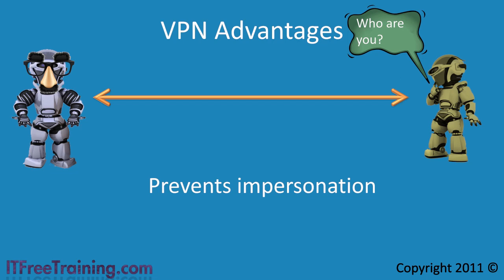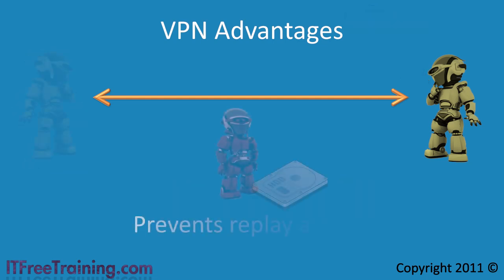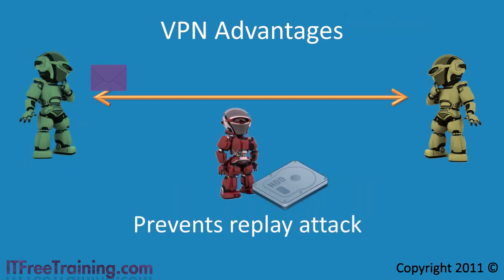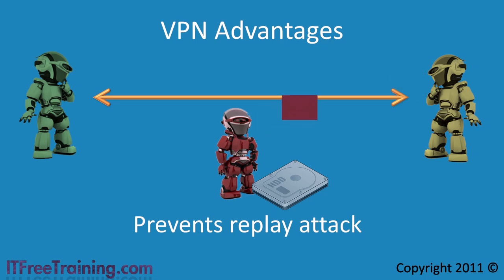A VPN connection also prevents what is referred to as a replay attack. A replay attack is when network traffic is saved by a third party and then played back at a later date. The start of a network stream usually contains traffic that authenticates the connection, such as usernames and passwords. If a third party captured this traffic, they could resend it to the server, effectively authenticating themselves as that user and then inserting any data they wanted.